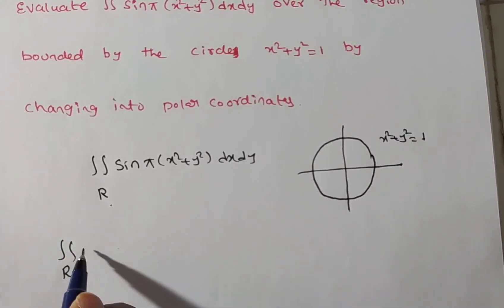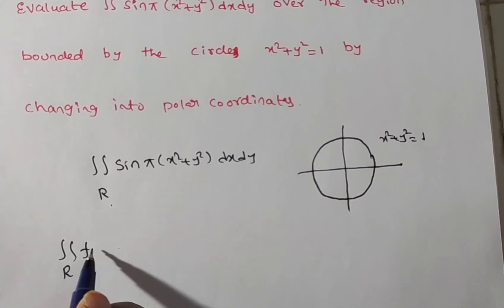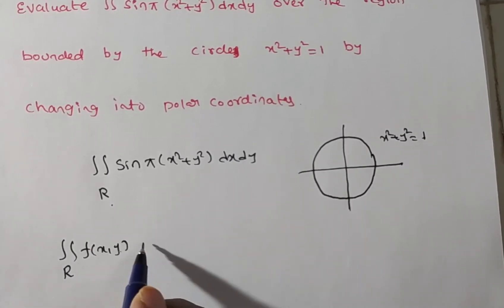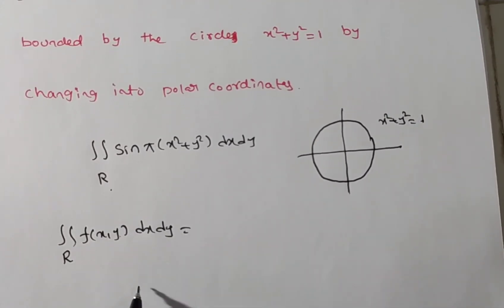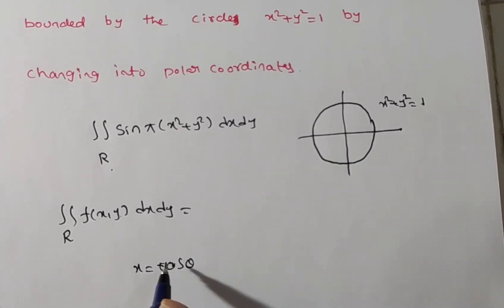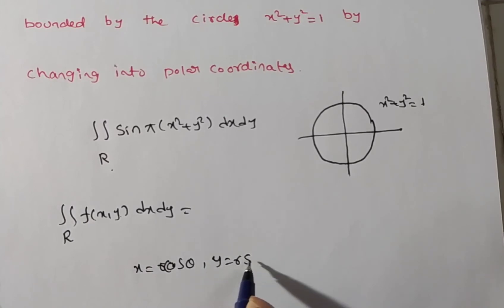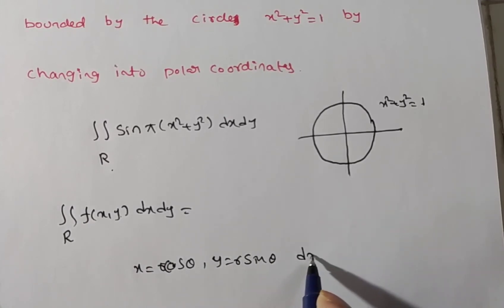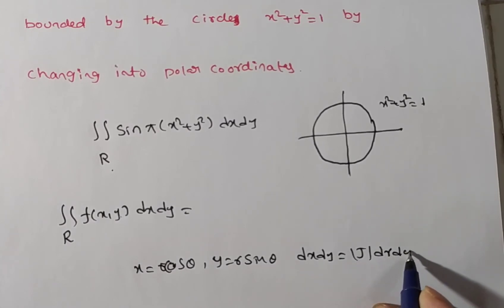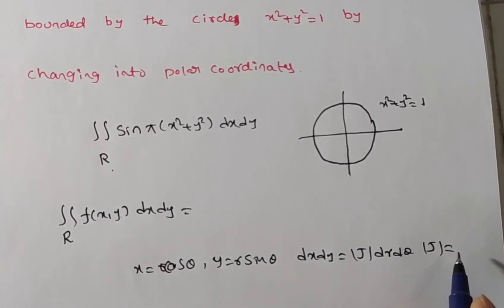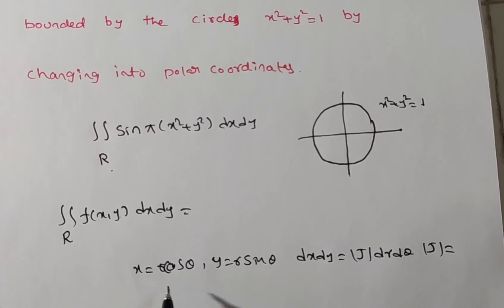If R is a region bounded in the x-y plane and f(x, y) is any integrand given in x-y terms, then changing into polar coordinates means we substitute x = r cosθ and y = r sinθ. For dx dy we use the Jacobian in polar coordinates, where x = r cosθ and y = r sinθ, giving us r — so dx dy becomes r dr dθ.